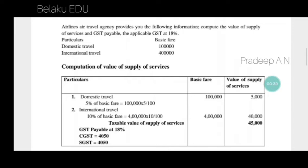The topic is value of supply in some special cases — specifically, air tickets for booking of tickets for an air traveler by an air travel agent, under Rule 32, sub-section 2.